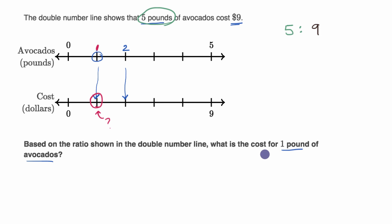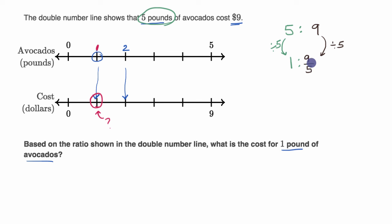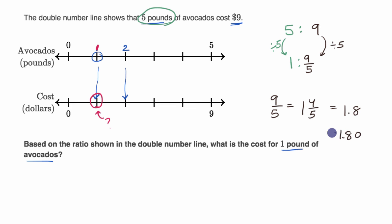If I were to have one pound of avocado, I have divided by five to get one pound. I would have to do the same thing for the cost. So if I divide nine by five, this is going to be nine-fifths dollars — nine-fifths dollars would be the cost of one pound. Nine-fifths isn't always the most natural way to write money. So nine-fifths equals one and four-fifths, which equals one and eight-tenths, which equals 1.8, or $1.80.